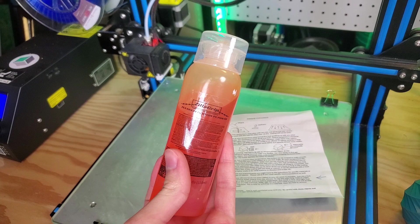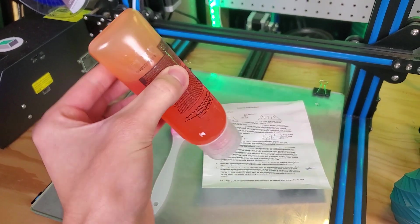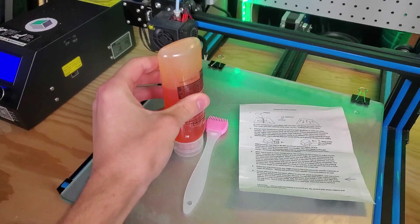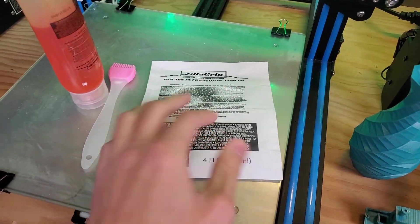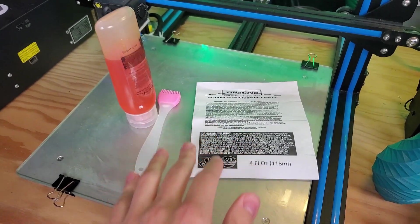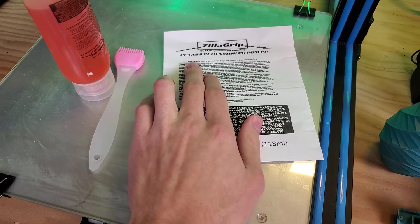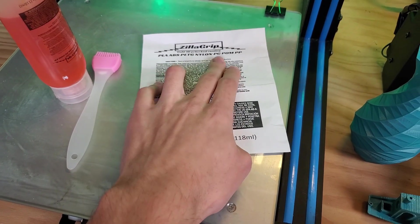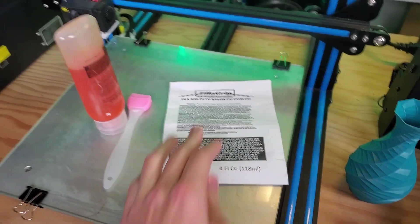Zillagrip was sent to me by the company to test and look at. This product apparently claims that when you put it on your printer bed, it will be able to print PLA, ABS, PETG, nylon, PC, POM, and PP on a cold bed.